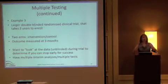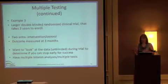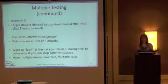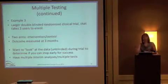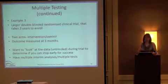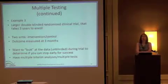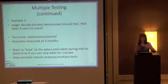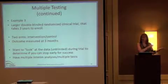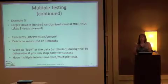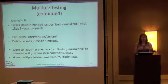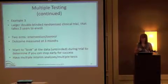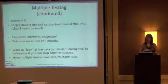Third example: a big double-blind randomized clinical trial that takes three years to enroll. Two arms — intervention versus control — outcome measured at three months, so three years plus three months total. You think three years is a long time, and you want to do unblinded interim analyses to see if early on one treatment is better. We talked about this in the context of DSMBs. Maybe you already know at two years that the treatment is better and don't want to wait. Is this a bad thing? No, but you have to handle these multiple interim analyses carefully.